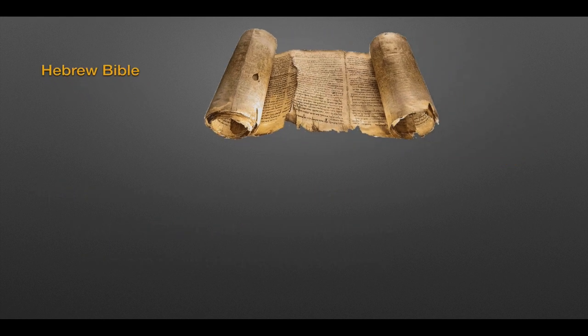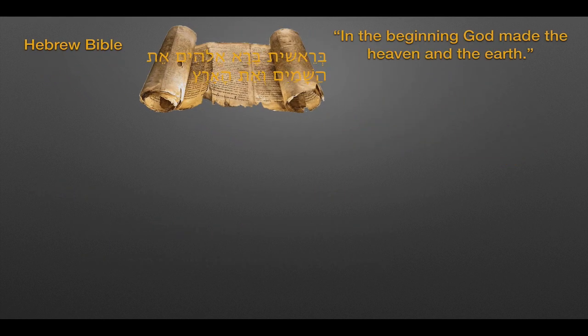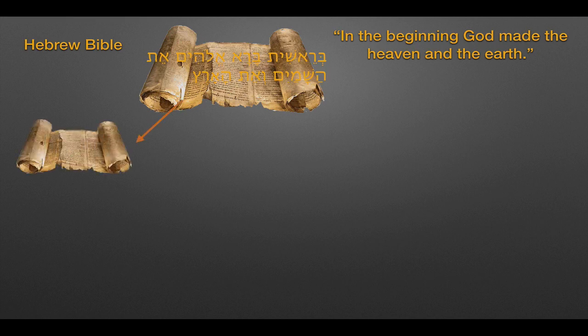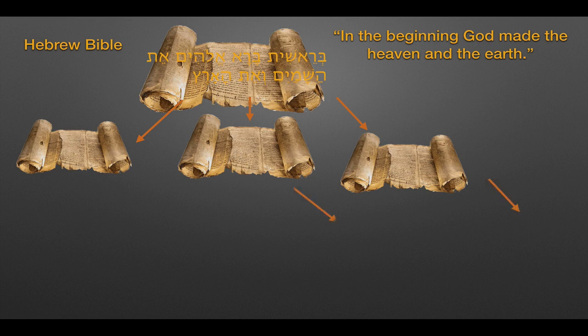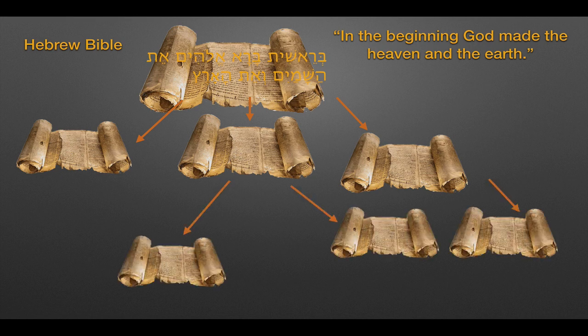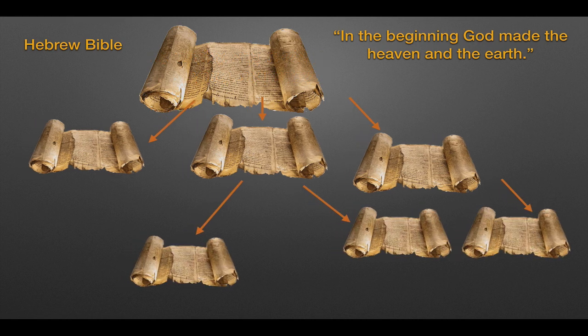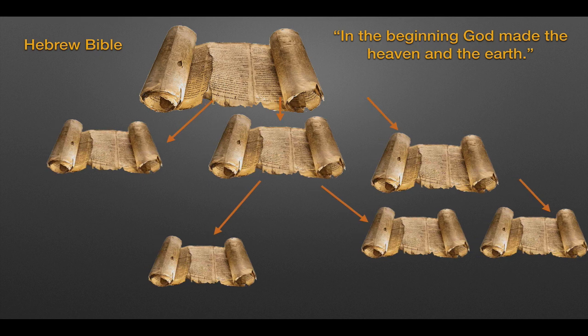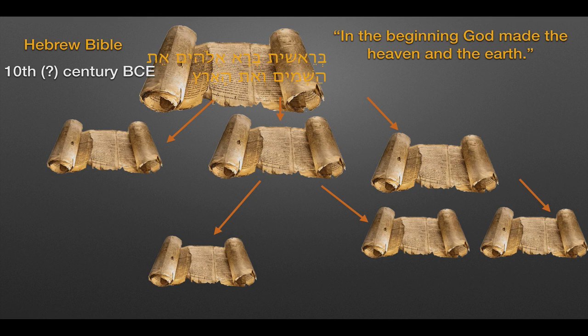At some point the Hebrew Bible is composed, begins to be composed in bits, book by book. And of course it gets copied — scrolls get copied, and copies are made from those copies.